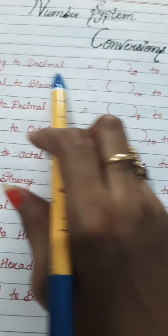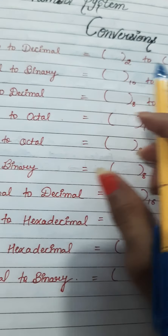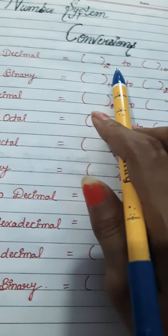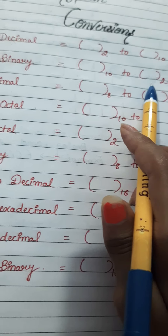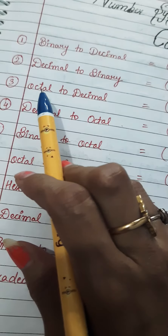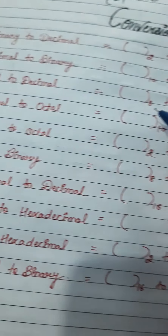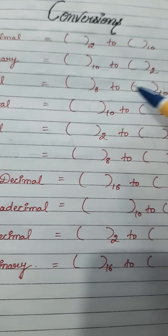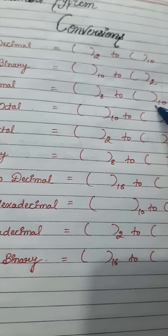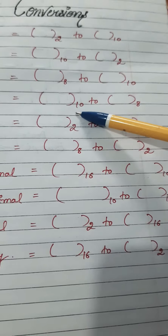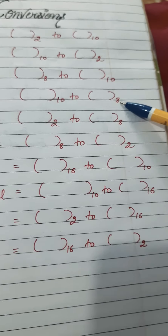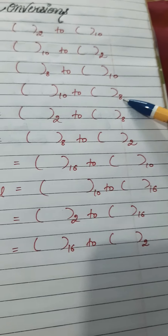We have shown the bases of these binary and decimal types. Binary to decimal means base 2 to base 10. Decimal to binary is base 10 to base 2. Octal to decimal means base 8 to base 10. For each conversion we have the original base and the converted base.